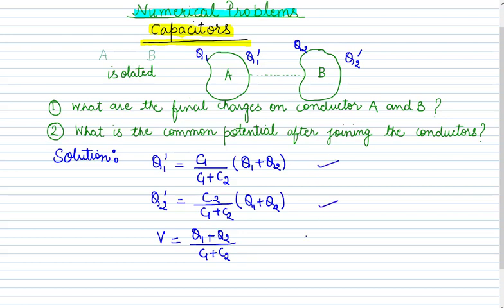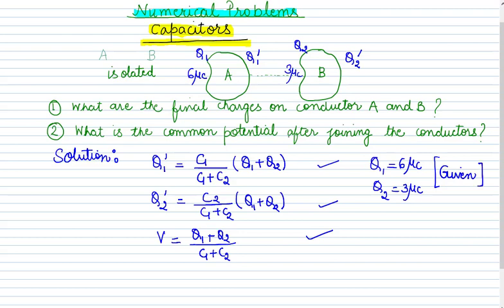Given in the question: Q1 = 6 microcoulomb, Q2 = 3 microcoulomb, C1 = 3 microfarad, and C2 = 6 microfarad. These four values are already given.